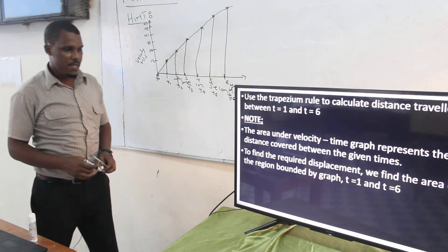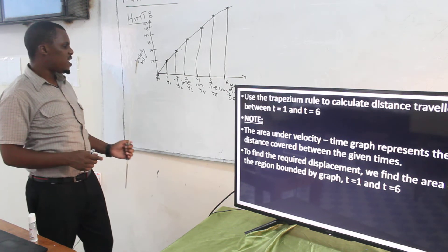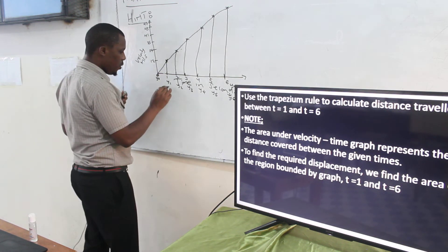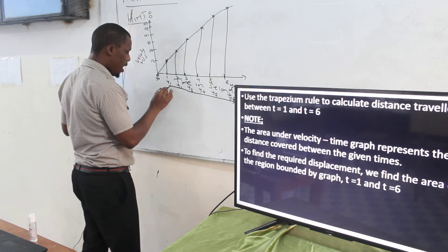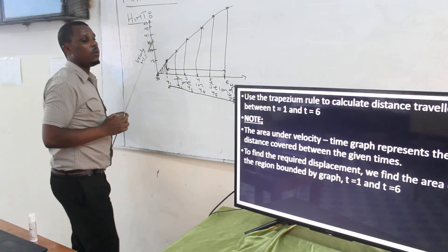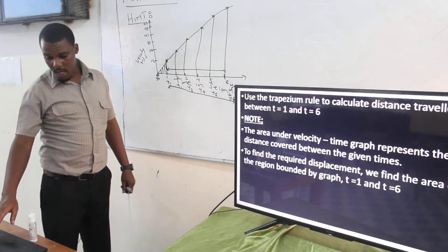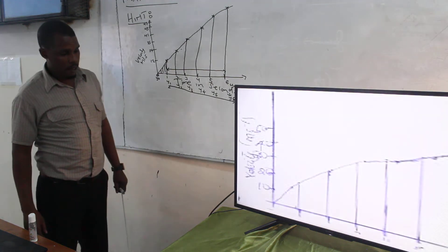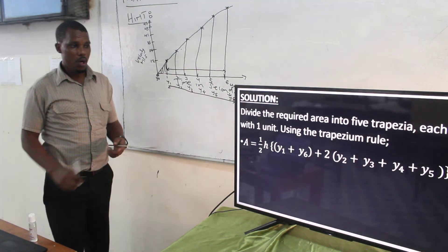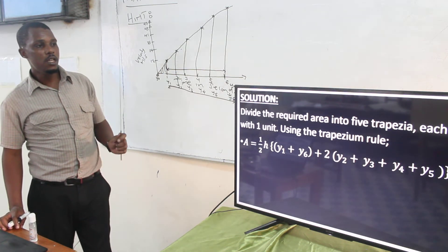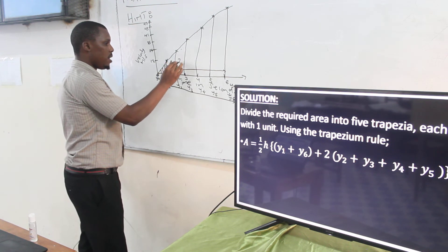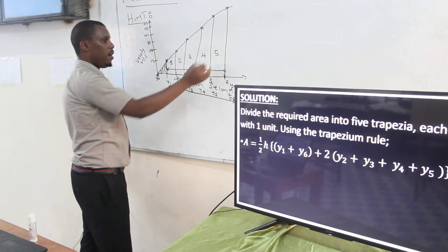When you are told to use the trapezium rule, you are starting from t = 1, not t = 0. The region we need to cover goes from t = 1 up to t = 6. The part before t = 1 is not included — that is the trick you need to know in the exam. We divide the area required into 5 trapezoids, each with 1 unit width, using the trapezium rule. This is trapezoid 1, 2, 3, 4, and 5.